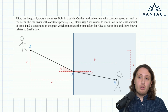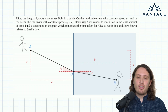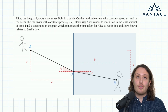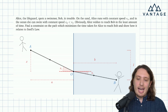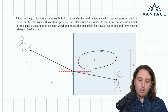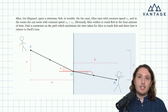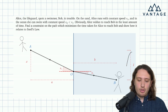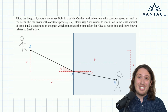We've also annotated some extra lengths: the total horizontal distance that she has to travel on the sand, we call that a; the total horizontal distance she has to travel in the water, we call that b; and the total vertical difference she has to travel to get to Bob, we call that l.